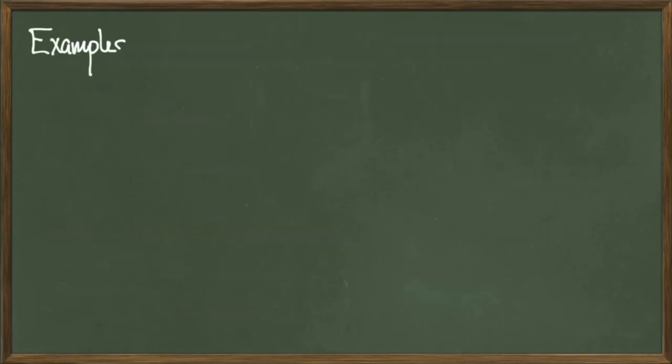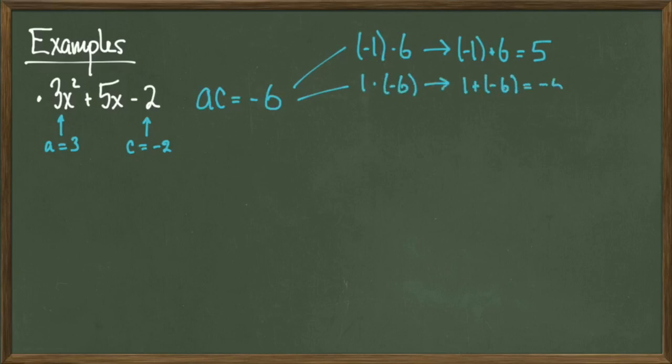We'll dive right into an example and factor the polynomial 3x squared plus 5x minus 2. In this problem we identify our leading coefficient 3 as the letter a and our constant term negative 2 as the letter c. a times c is then equal to negative 6. Now we need to find factors of negative 6 that sum to positive 5.